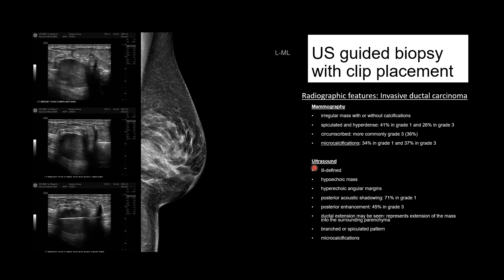On ultrasound, we're going to see an ill-defined hypoechoic mass with hyperechoic angular margins. There could be posterior acoustic shadowing, more likely in grade one, or posterior enhancement like we saw in this case, more likely in grade three — although our patient did end up having a grade one lesion. We'll also possibly see ductal extension representing spread into the surrounding parenchyma, a branching or spiculated pattern, and possibly microcalcifications.